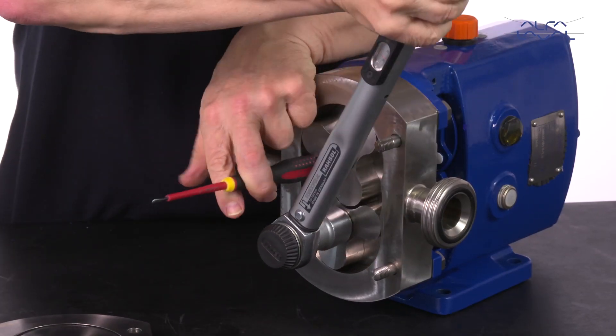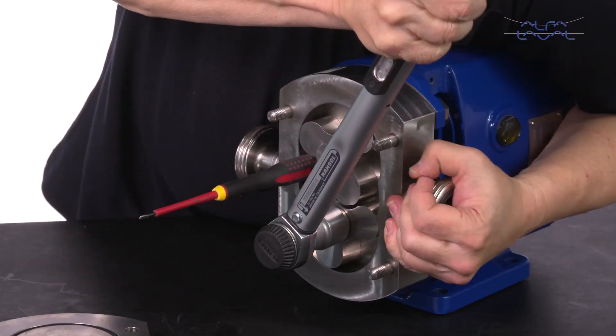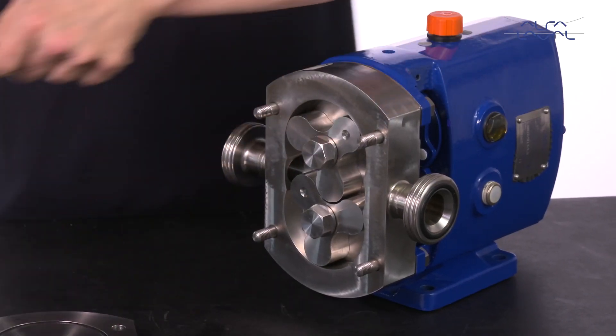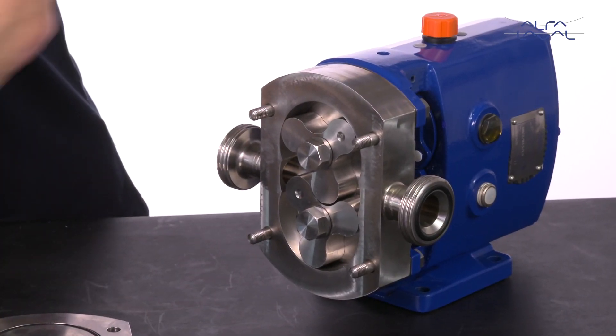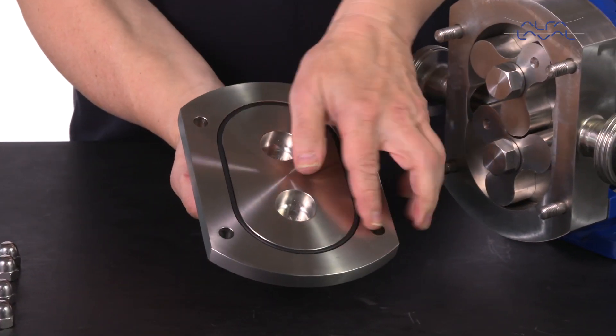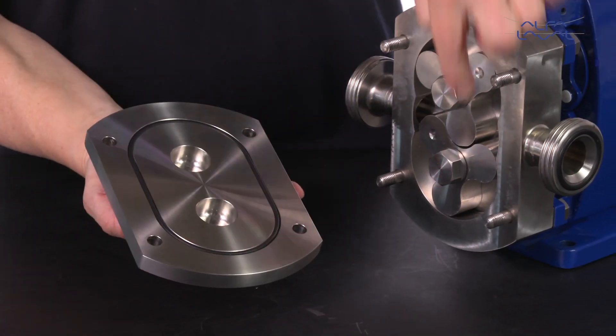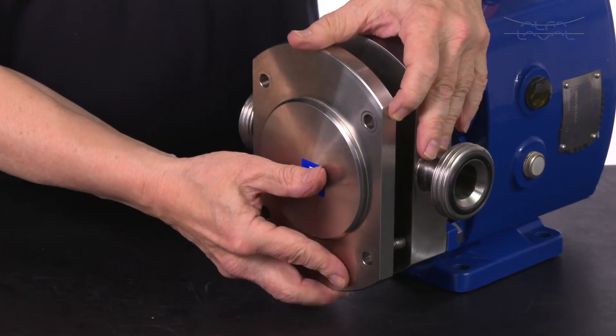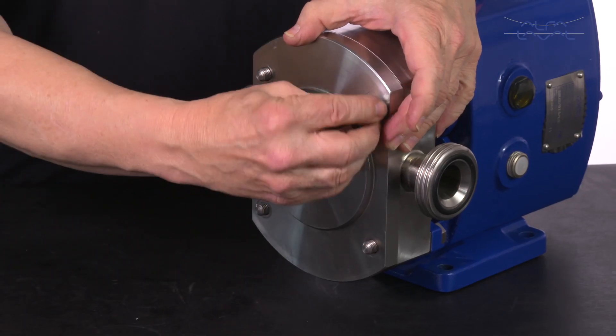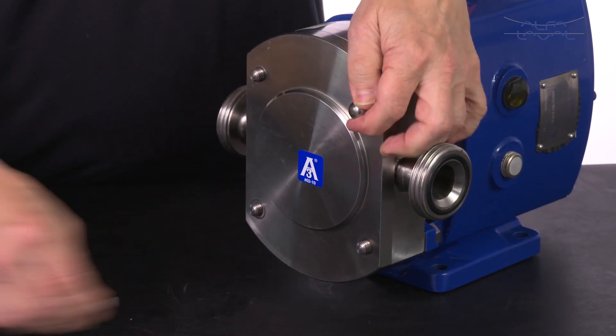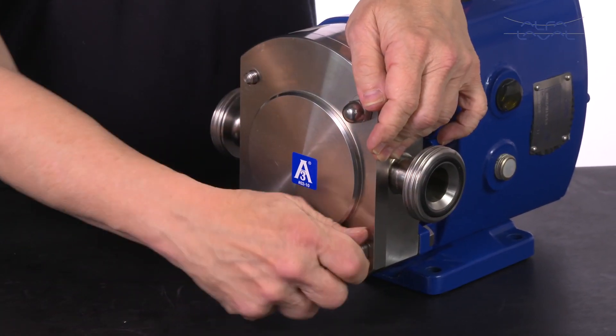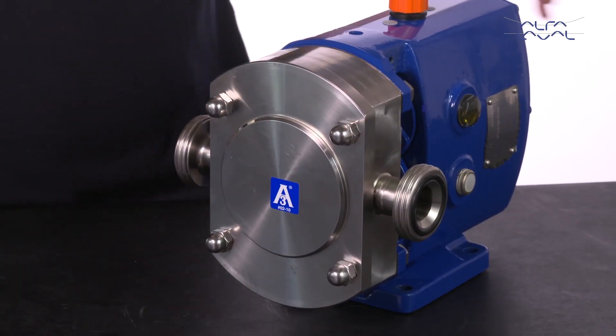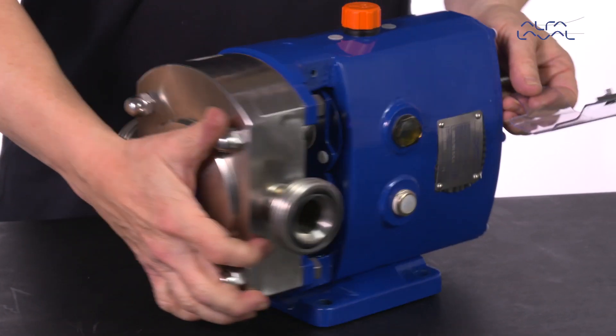Then tighten the rotor retention nuts to the recommended torque as shown in the instruction manual. Now fit the front cover back onto the case. Mount the safety guards.